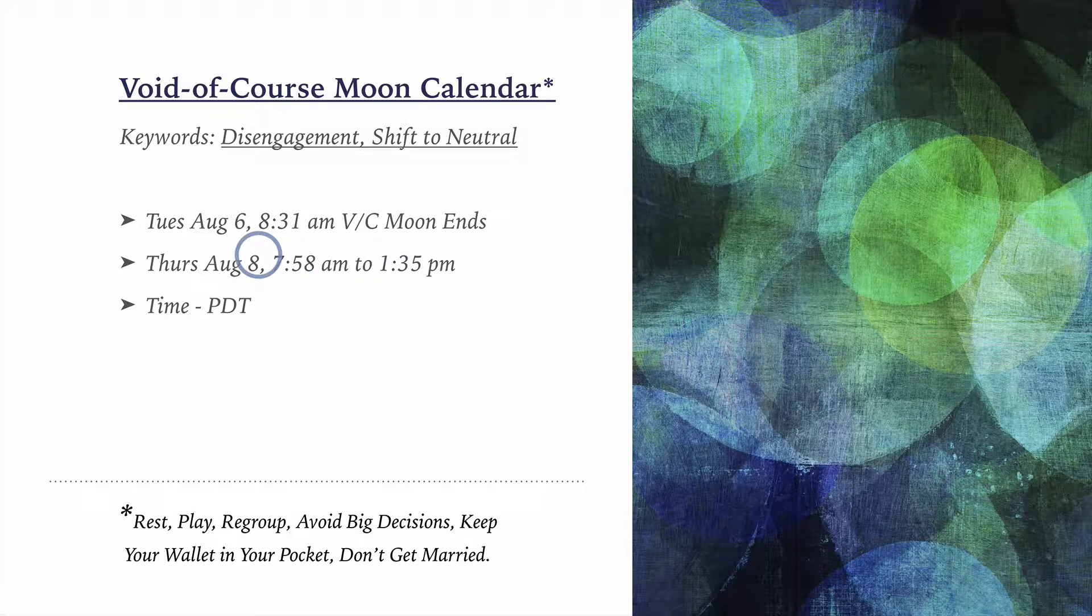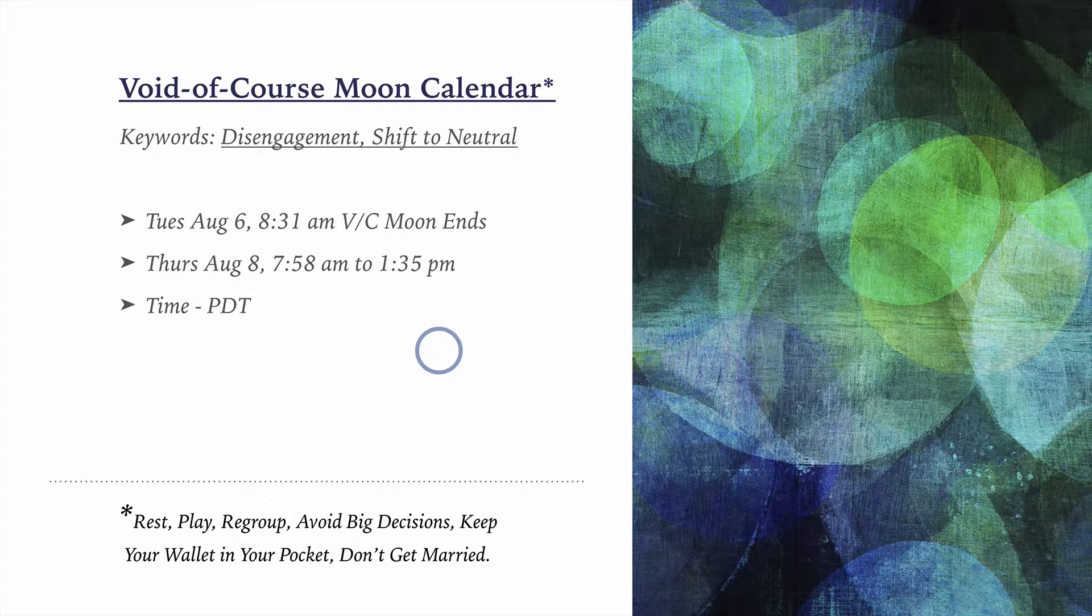And if I had something scheduled that I felt was important, then if I can I would reschedule it. If I can't, then I would do everything possible to attend to the details of that activity. I really wouldn't want to sign something important like a contract, but if I have to do something important, then I would just double-check everything. Okay, so let's move on.